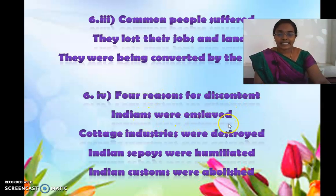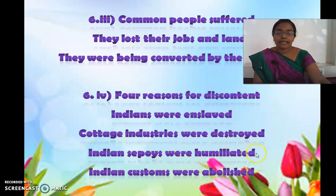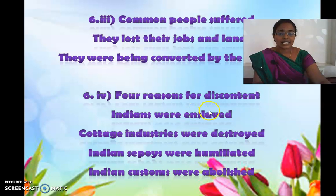Indians were enslaved, according to Regulation Act 3 of 1818. Cottage industries were destroyed. Indian sepoys were humiliated by the Britishers. Indian customs were abolished. These are the four reasons why there was dissatisfaction, which led to a revolt and which led to the first war of independence.